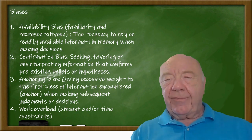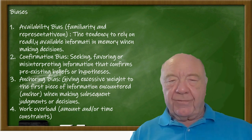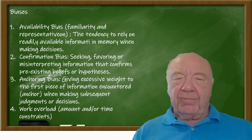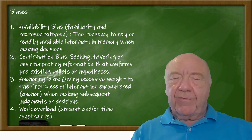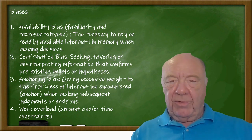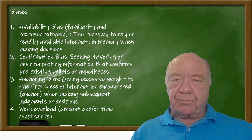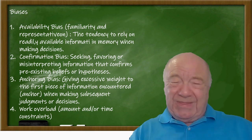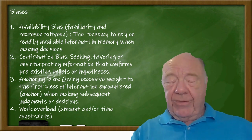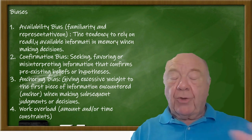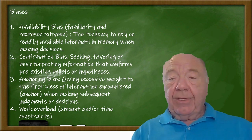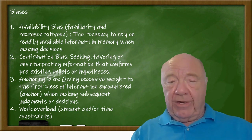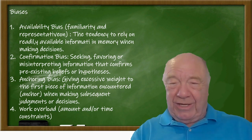Anchoring bias is similar to confirmation bias, but the cause is different. You grab hold of a piece of information or hypothesis that makes the most sense and cling to it regardless of what else comes in. This is often caused by being overwhelmed by incoming information — you're getting too much, you're overloaded, so you grab the first thing that makes sense and cling to it like a life raft.